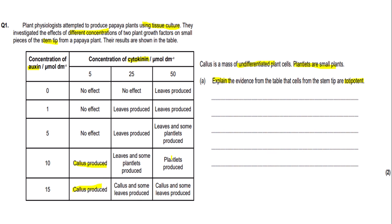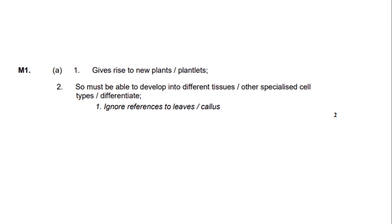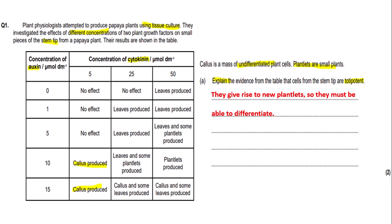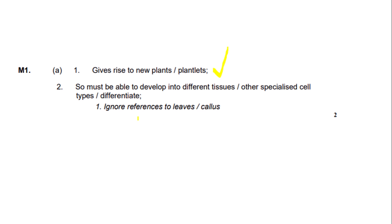As shown in the table, new plantlets are produced from the stem tip cells, and leaves are also produced. This means the cells must be able to differentiate into different types of plant matter, which gives evidence that they have totipotency. The mark scheme awards marks for: (1) giving rise to new plants or plantlets, and (2) they must be able to differentiate into different tissues or specialised cell types. We get both marks. Note: references to leaves or callus are ignored for mark point one.